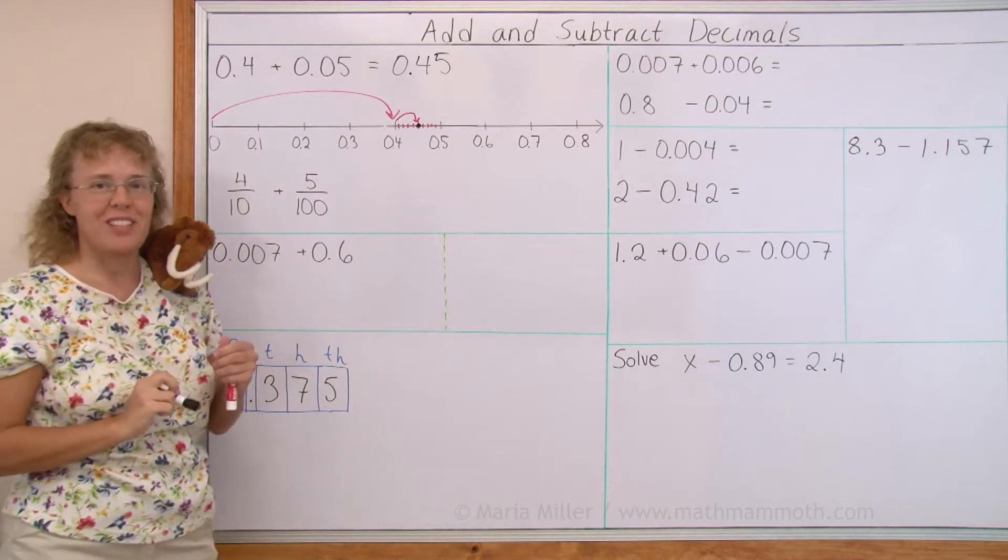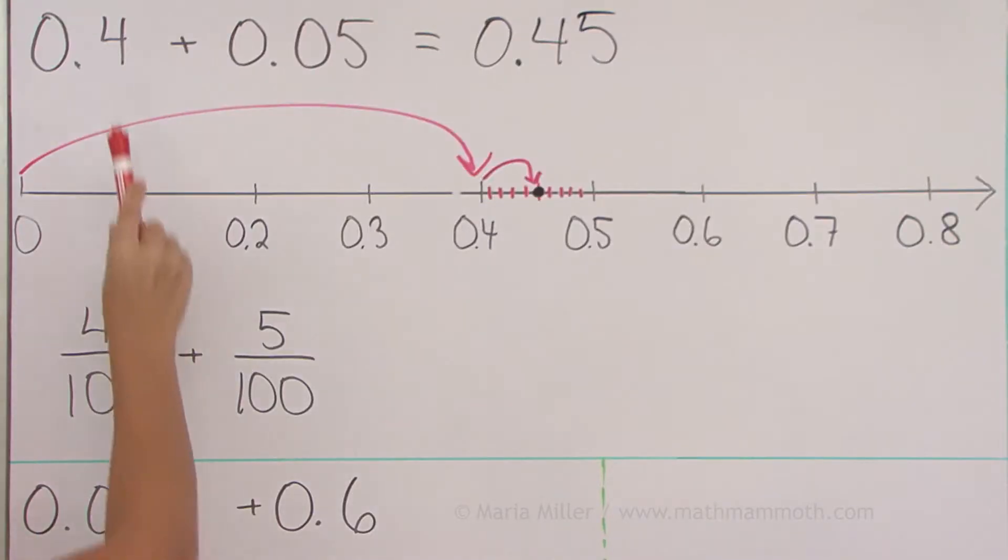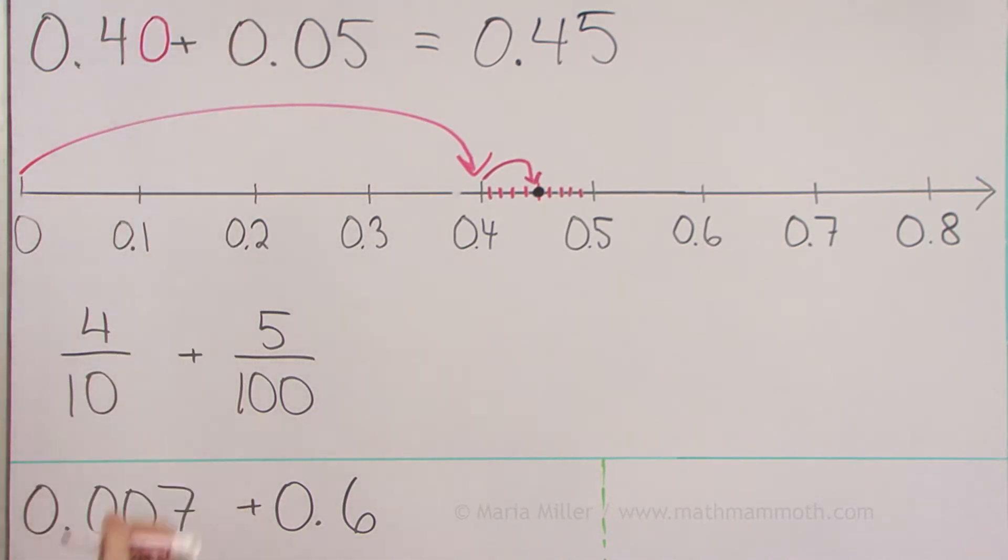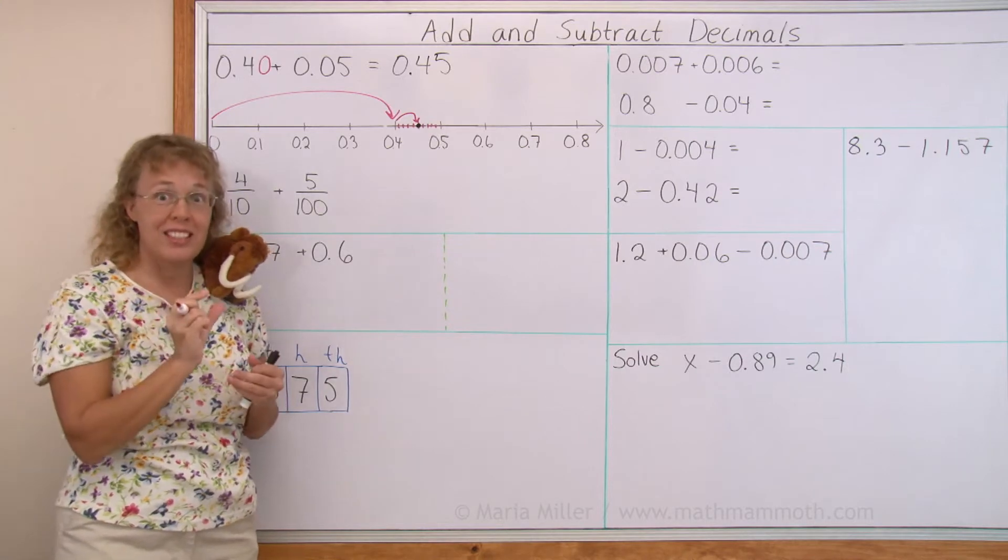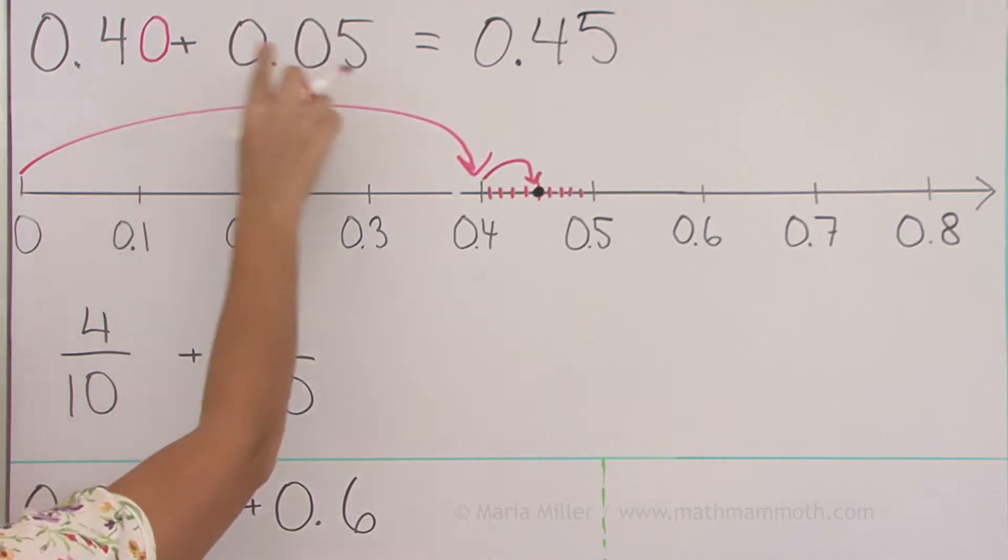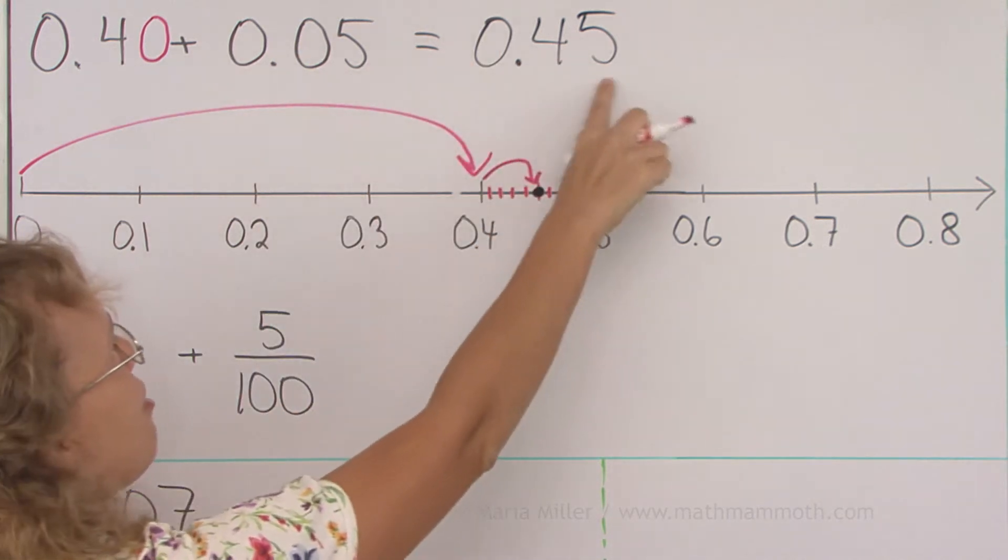I want to show you another way how you can see that. Think of this 4 tenths as 40 hundredths. You should know by now that 4 tenths is indeed equal to 40 hundredths. And now we have 40 hundredths and 5 hundredths, so we get 45 hundredths.